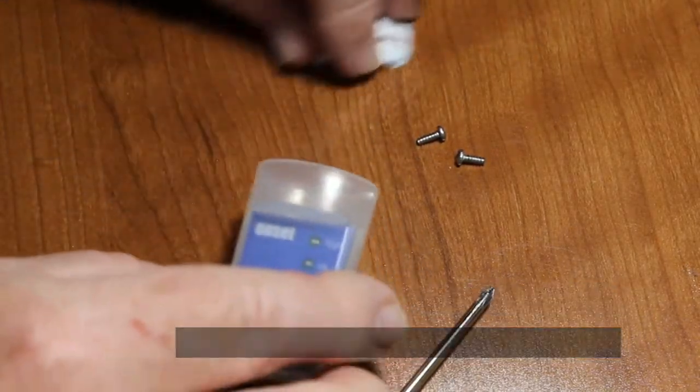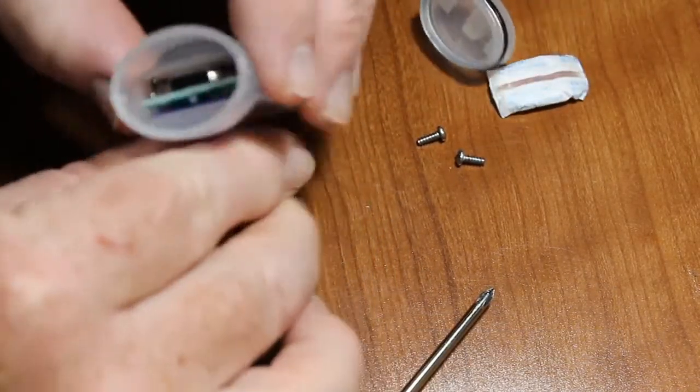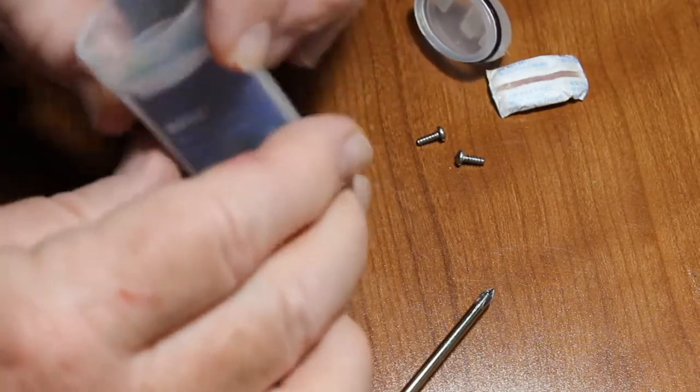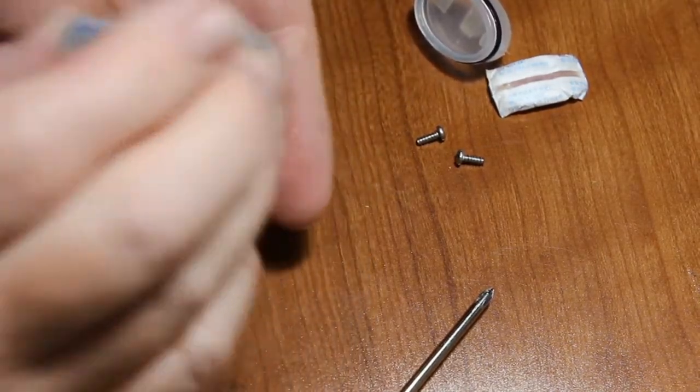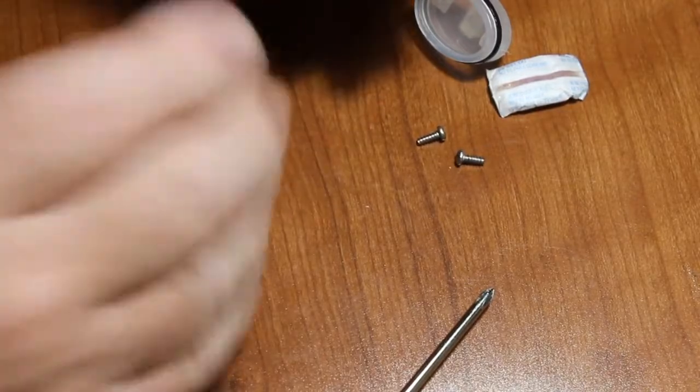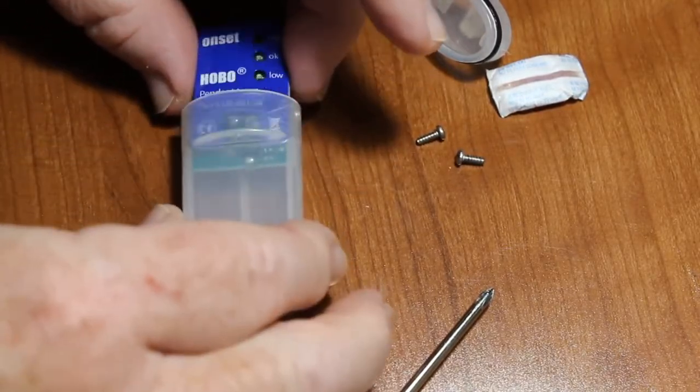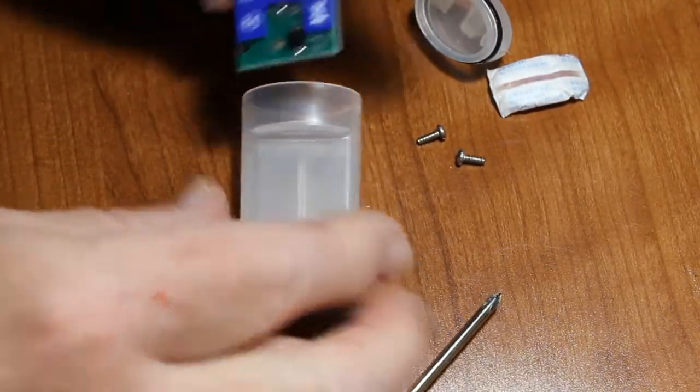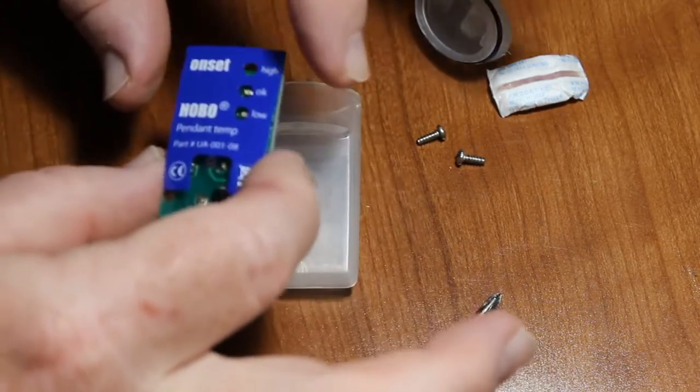So here is our pendant and we want to take this out of the case so just tip it upside down and give it a tap. And you will see that the PC board and the label come out.